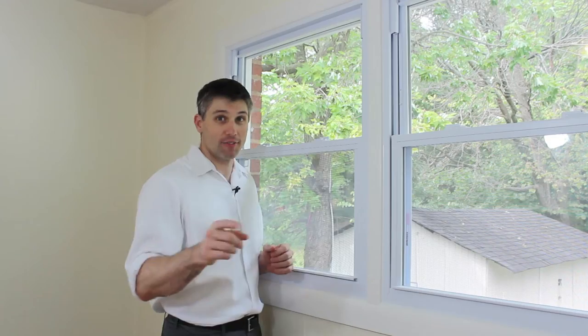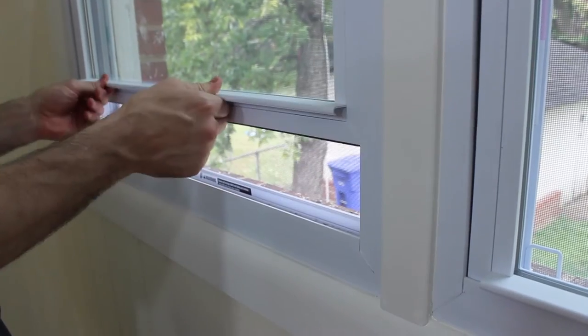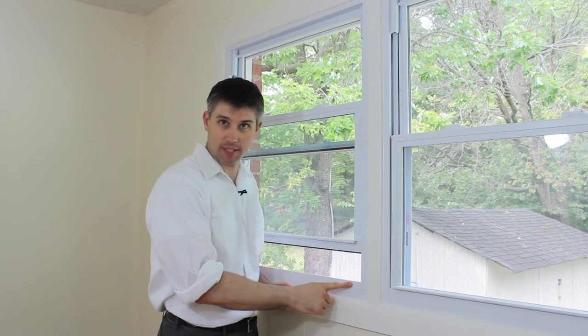It's easy to damage double hung windows that tilt in for easy cleaning. The first thing I do with this type of window is raise it up several inches to prevent this bottom piece from cracking.